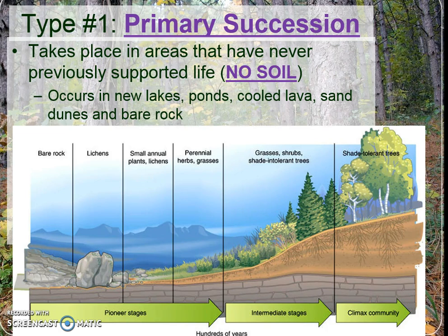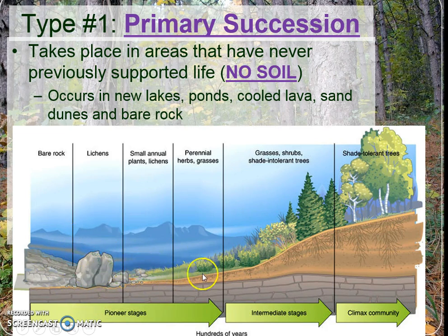Primary succession will happen when there are brand new lakes, brand new ponds, cooled lava, sand dunes in a desert or on a beach, or bare rock because of a landslide. It's not very common, but if nothing's ever lived there and there's no soil, it's primary succession. It's going to happen slowly over hundreds of years, because it takes so long to get nutrient-rich and gain massive amounts of soil before big trees can start to survive — a long, long time for primary succession to happen after a natural or human-caused disturbance.